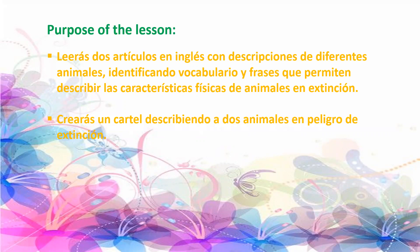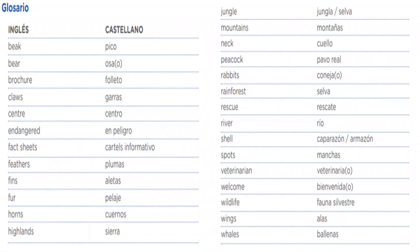Let's continue. Vocabulary - glosario, inglés y castellano. Big - pico. Beer - oso. Brochure - folleto. Cross - garras. Center - centro. Endangered - en peligro. Fat chips - carteles informativos. Feathers - plumas. Fins - aletas. Fur - pelaje. Horse - cuernos. Highlands - sierra.